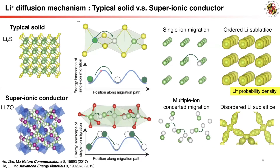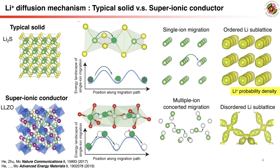In a typical solid, ion conduction is mediated by the migration of a single ion among sites in the crystal structure. In superionic conductors, ion diffusion occurs through the concerted migration of multiple lithium ions, achieving a low migration energy barrier. This concerted migration results from a disordered lithium ion sublattice caused by geometric frustration.